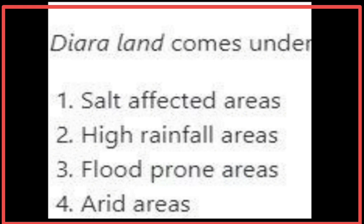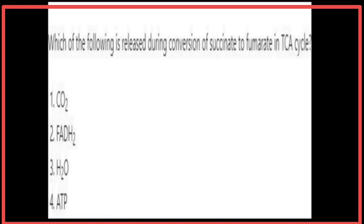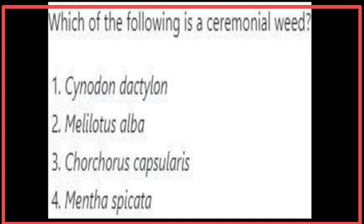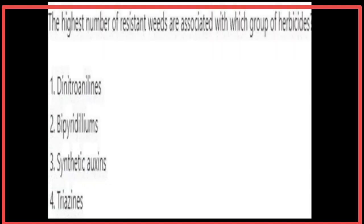Diara land comes under flood-prone areas. Under dryland farming, single cropping is the most prominent practice. FADHâ‚‚ is released during the conversion of succinate to fumarate in the TCA cycle. Cynodon dactylon is a ceremonial weed. Desmotubules are identified in plasmodesmata. The highest number of resistant weeds are associated with the triazine group of herbicides.